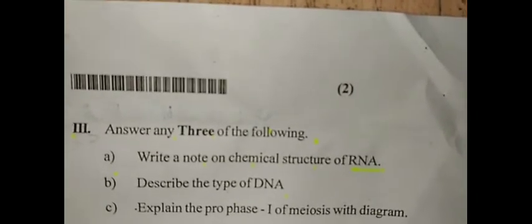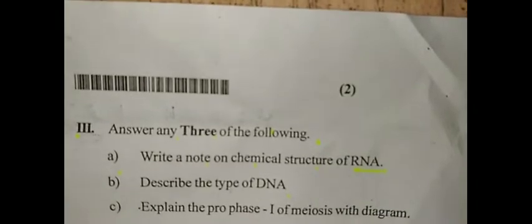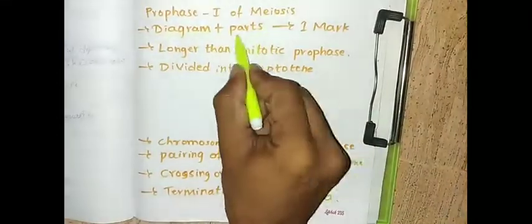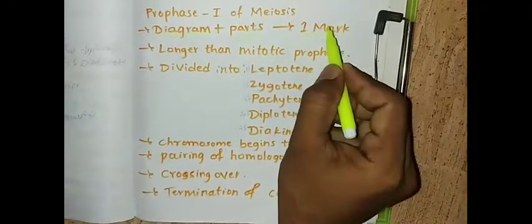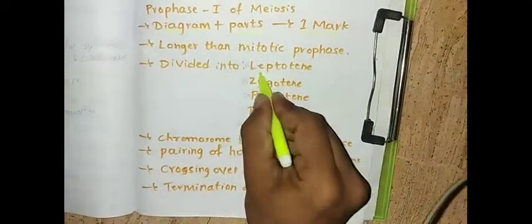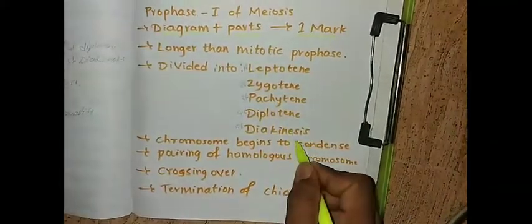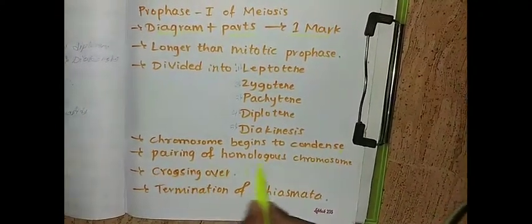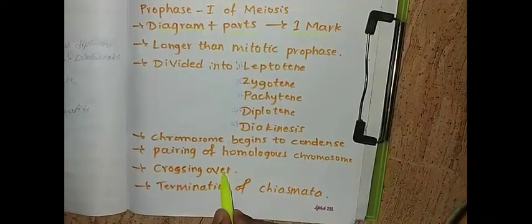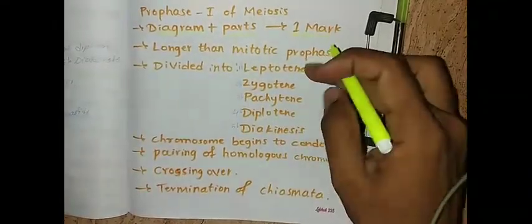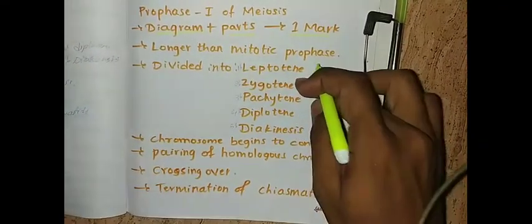The next question is explain the prophase one of meiosis with a diagram. First you have to draw a diagram and label the parts, then you can get one mark easily. Its features are: it is longer than mitotic prophase. It is divided into leptotene, zygotene, pachytene, diplotene, and diakinesis. In this, chromosome begins to condense, pairing of homologous chromosomes starts, crossing over of non-sister chromatids starts, and termination of chiasmata happens. Instead of writing this, you can write the functions of each stage - leptotene, zygotene, pachytene, diplotene, diakinesis.